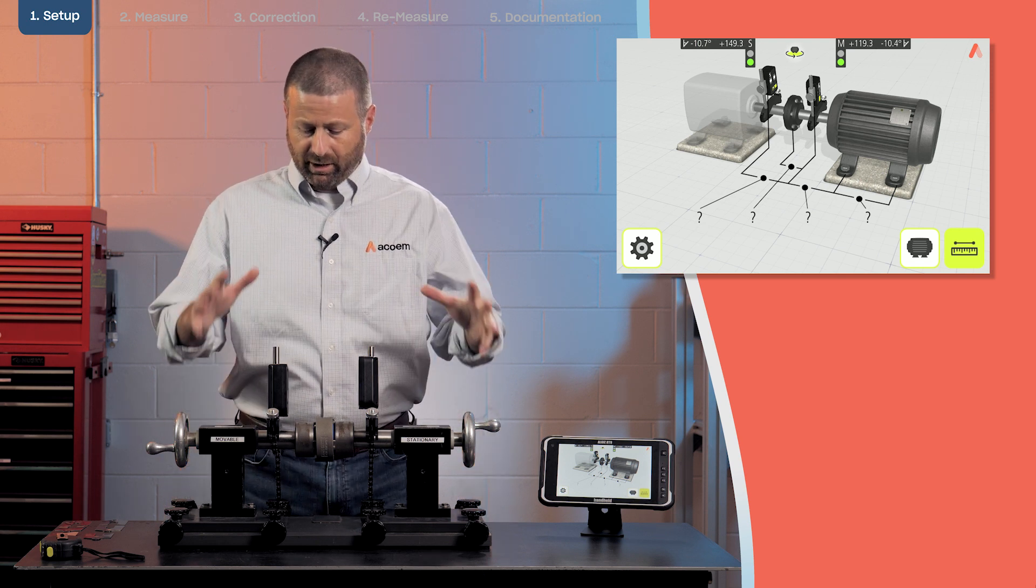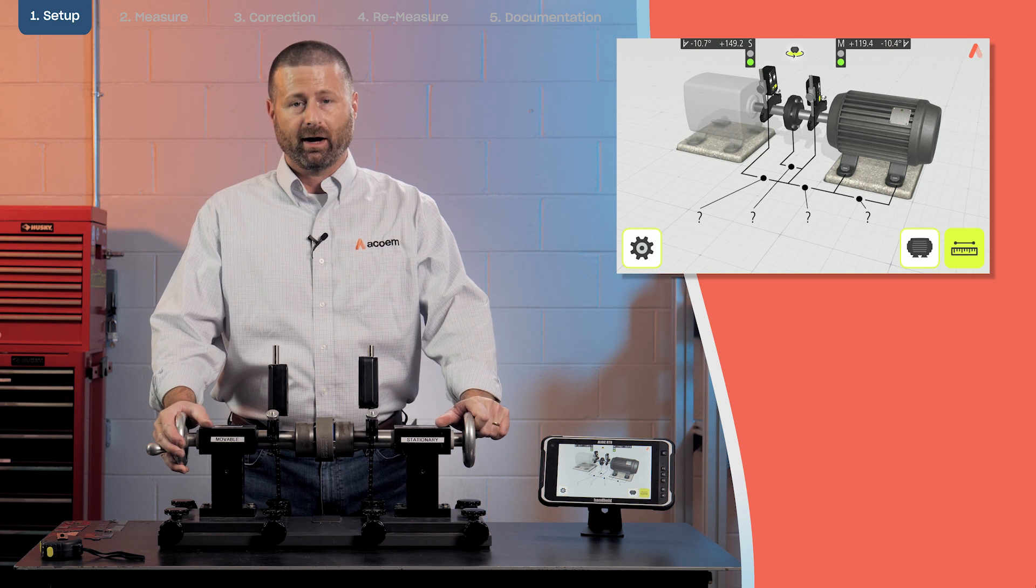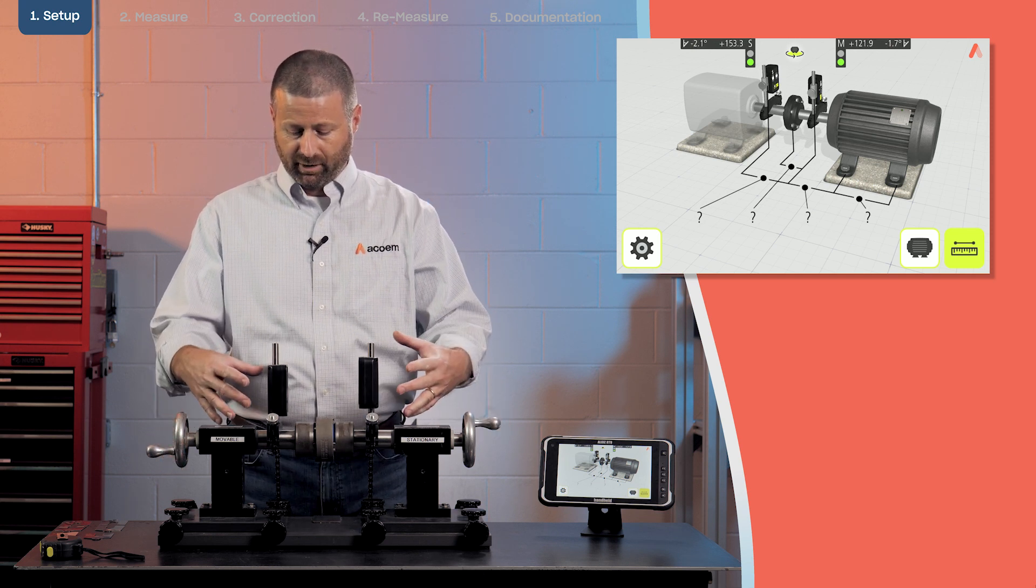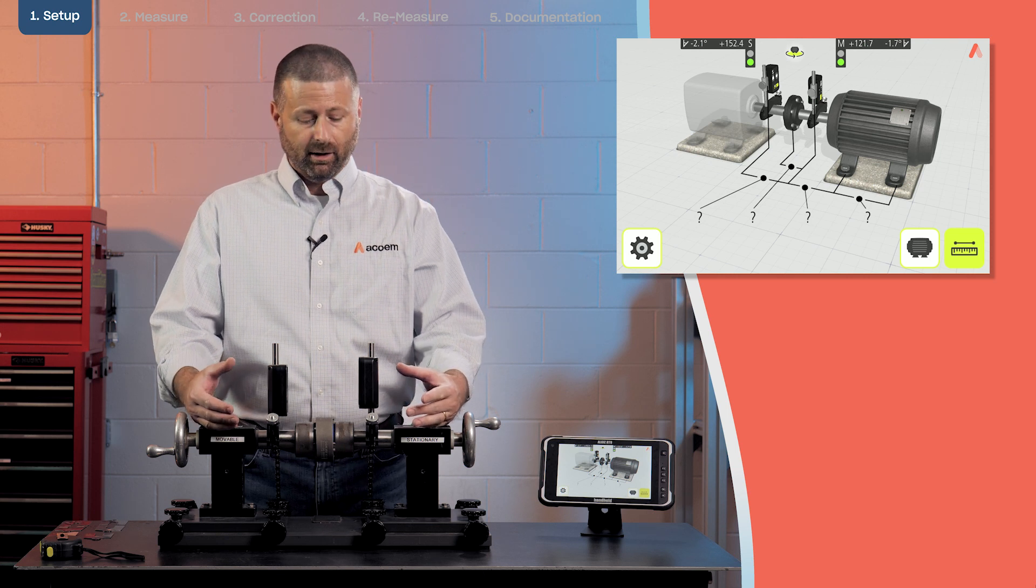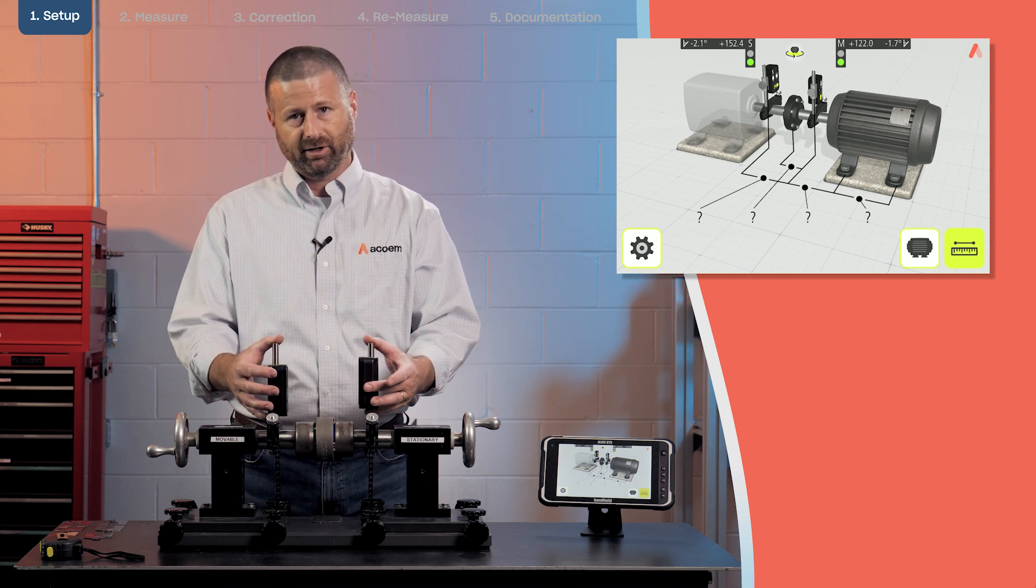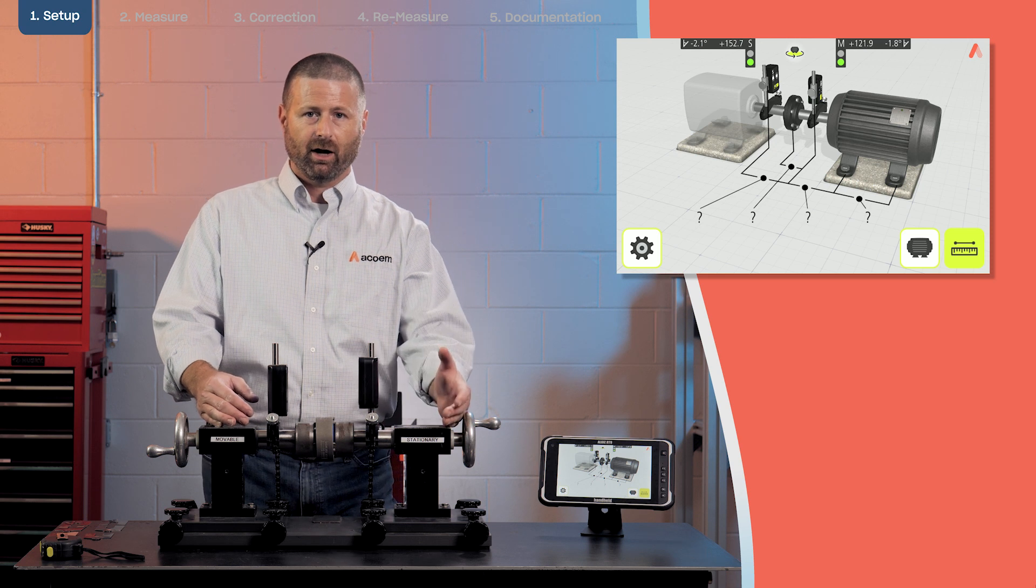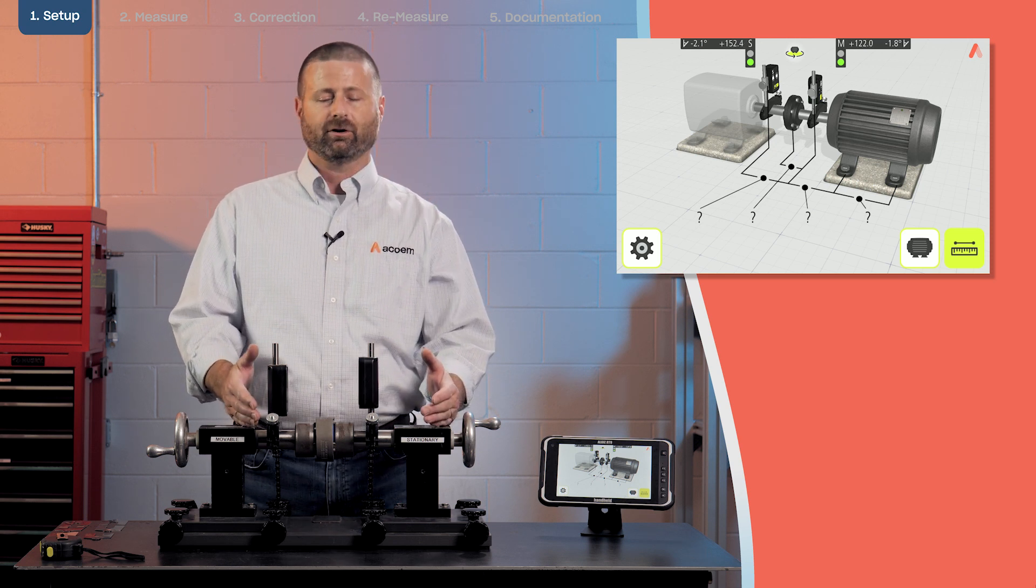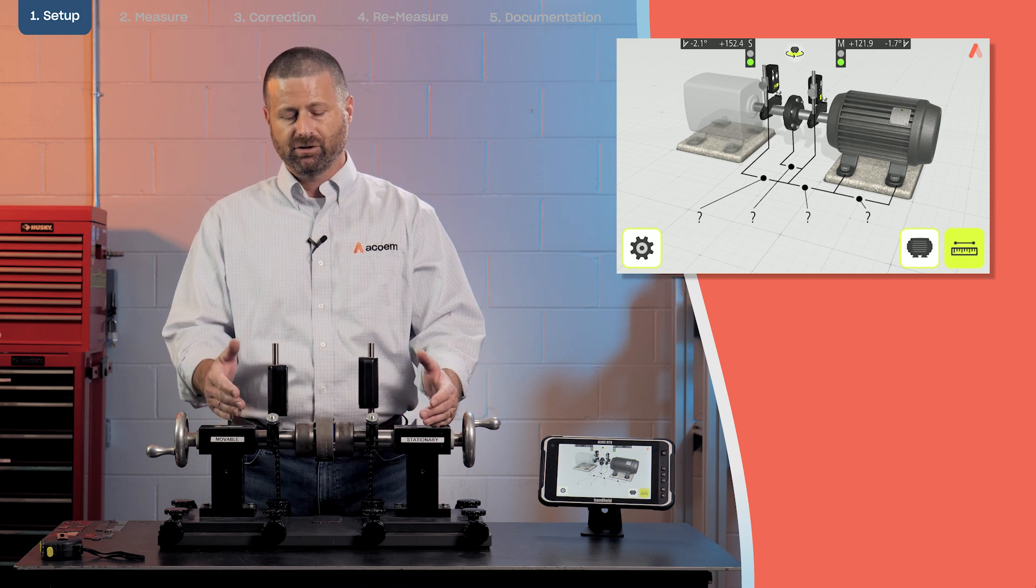So the first thing we're going to do is get everything set up correctly. In the setup we have two chain brackets here and a stationary sensor and a movable sensor. Generally the stationary going on the side that you don't plan on moving and the M sensor going on the motor or the side that you do plan on moving.